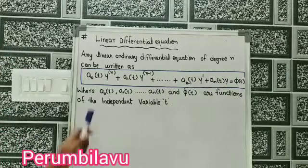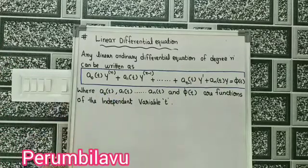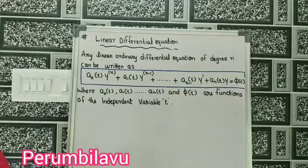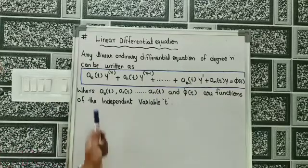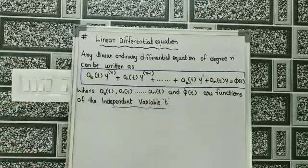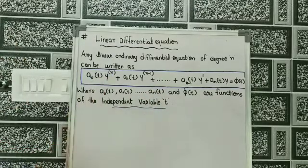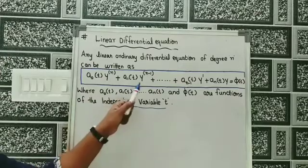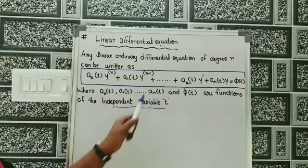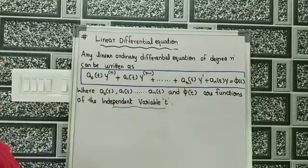Here, a naught of t, a₁ of t, ... aₙ of t, and phi of t are functions of the independent variable t. Also, y-n is the nth derivative, y-(n-1) is the (n-1)th derivative, and y-dash is the first derivative.